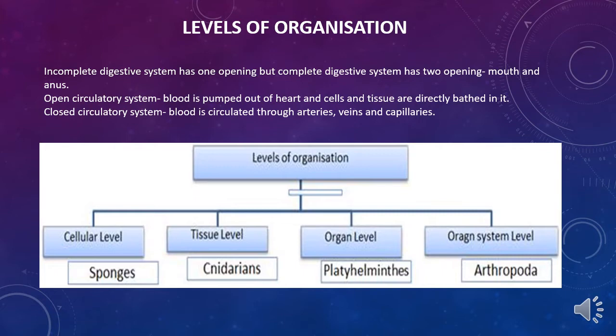Example is Hydra. Coming to the tissue level of organization, cells performing the same function are arranged into tissues. A group of cells having definite functions is called tissues, and this is called the tissue level of organization. Example is Coelenterates. The arrangement of cells is more complex than that of Porifera. Coming to the organ level, in Platyhelminthes and other higher phyla, tissues are grouped together to form organs — tissues with definite functions are grouped to form organs, which have a particular function.